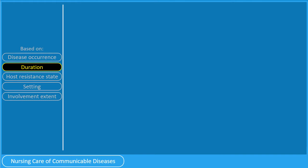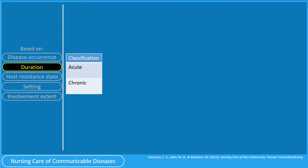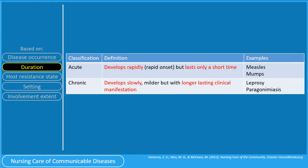Let us proceed with the classification based on duration. Based on this classification, a disease may be acute or chronic. Acute illnesses generally develop suddenly and last a short time, often only a few days or weeks. Chronic conditions, on the other hand, develop slowly and may worsen over an extended period of time, from weeks to months to years. Measles and mumps are examples of acute illnesses, while leprosy and paragonimiasis are chronic illnesses.